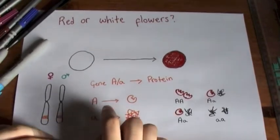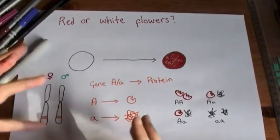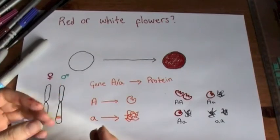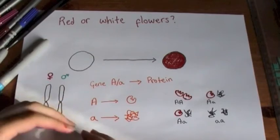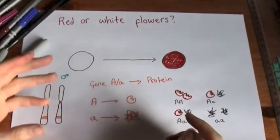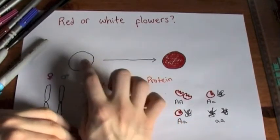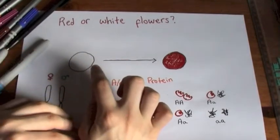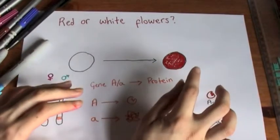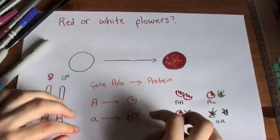And so when we look at dominant, normally in systems, something is dominant when the protein that it codes for is functional. So we have a protein here, an enzyme, that converts this colorless precursor molecule into a red pigment. And so this enzyme catalyzes this process.